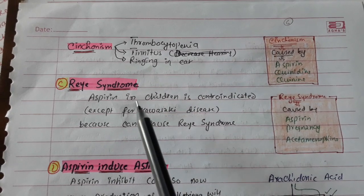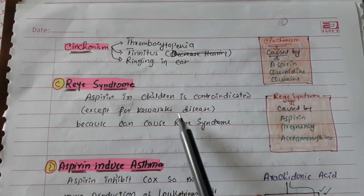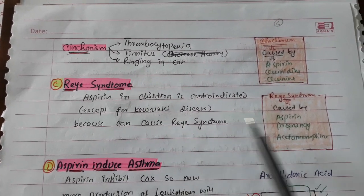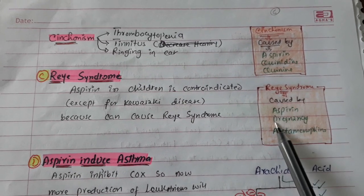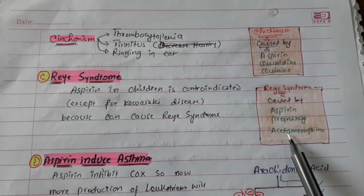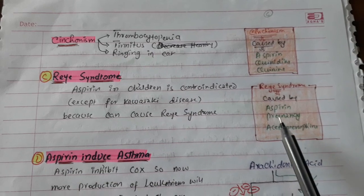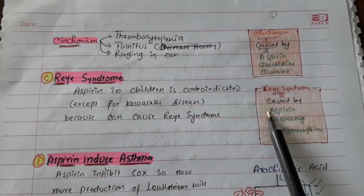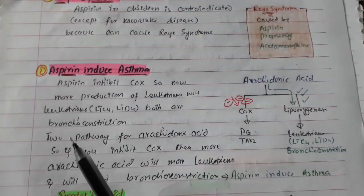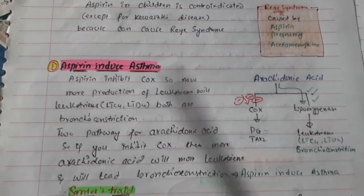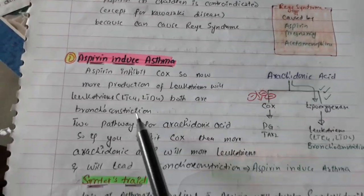Aspirin, quinidine, and quinine cause synchronism. Reye's syndrome in children can be caused by aspirin — we use aspirin in children only for Kawasaki disease. Reye's syndrome can also be caused by pregnancy and acetaminophen toxicity.